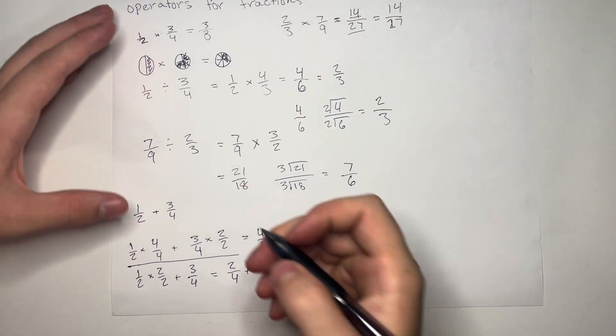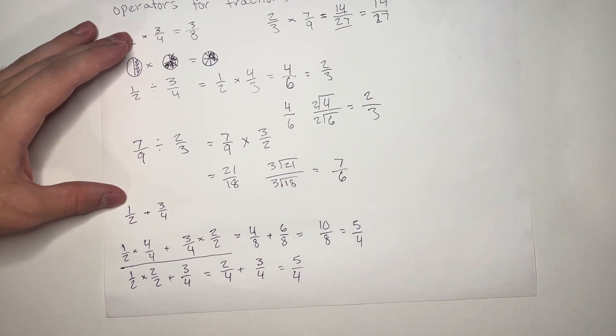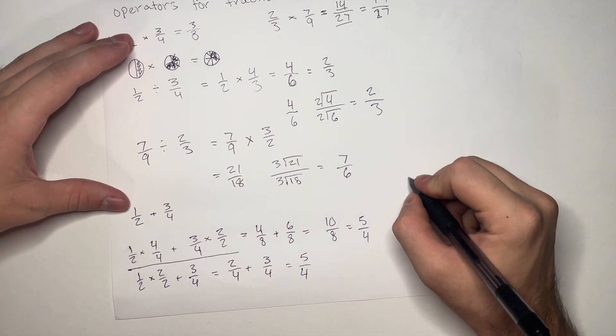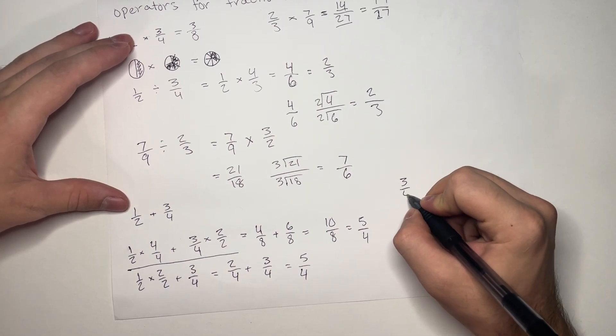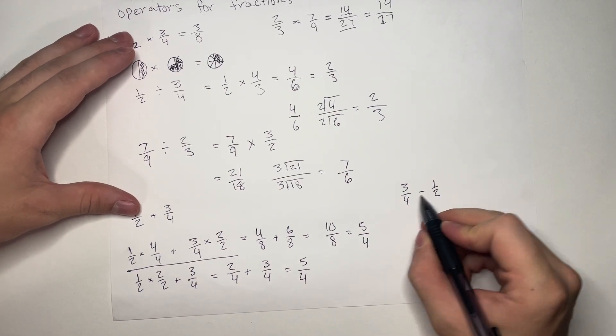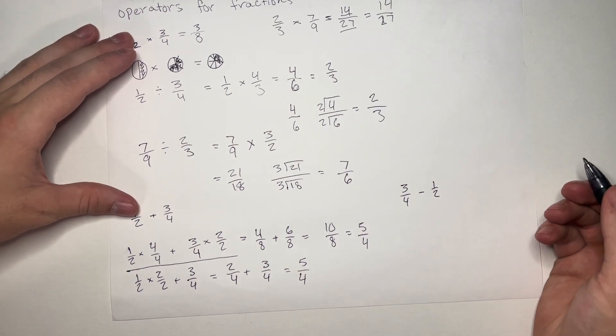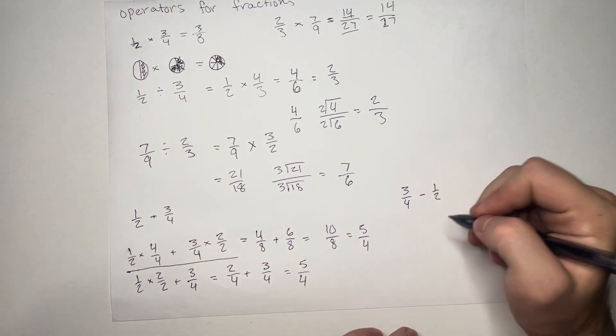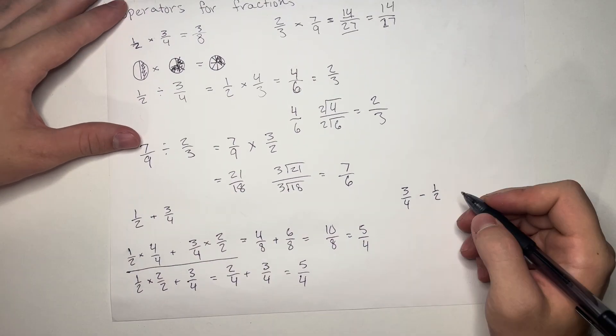Now, let's go ahead and show this same thing again with subtraction. Let's do 3 over 4 minus 1 over 2. If we did 1 over 2 minus 3 over 4, we'd get a negative number. Since 3 over 4 is bigger than 1 half. Okay?